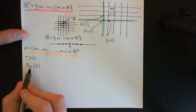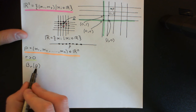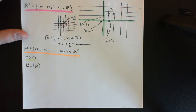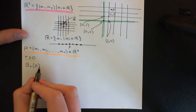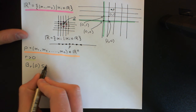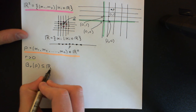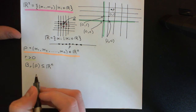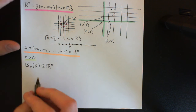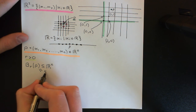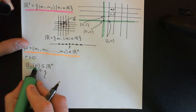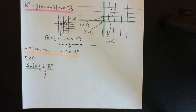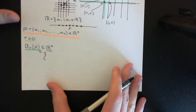The ball of radius R around the point P in Rn is denoted B subscript R, brackets P. So B for ball, subscript R which tells us the radius, and then brackets P which tells us the point in Rn that we're actually going to have this ball around. This is going to be a subset, fundamentally, of Rn, and it's going to be the subset that contains all elements of Rn such that a certain condition holds.